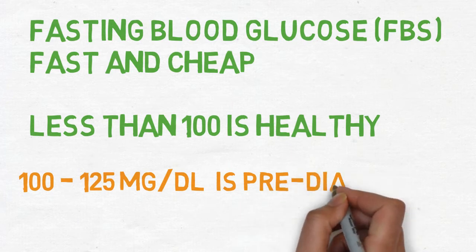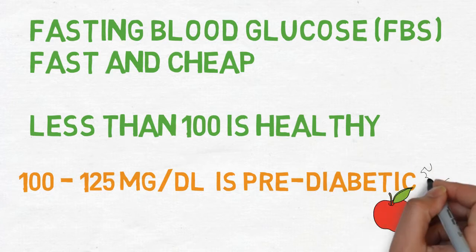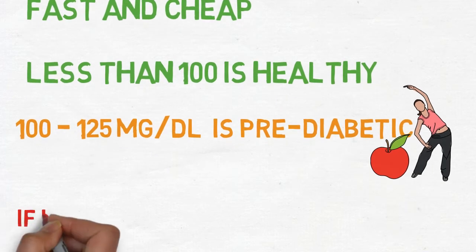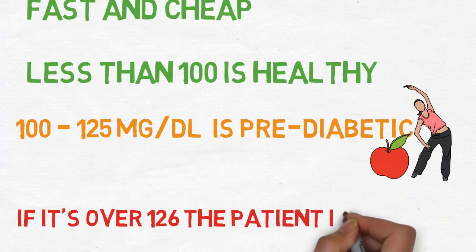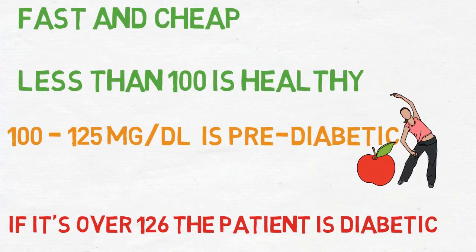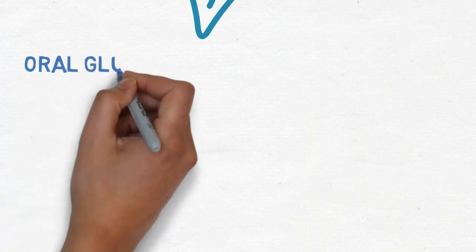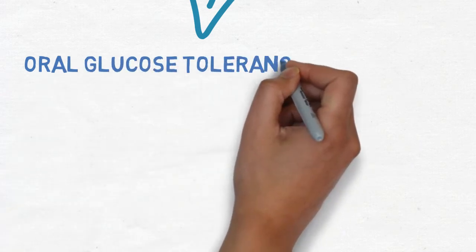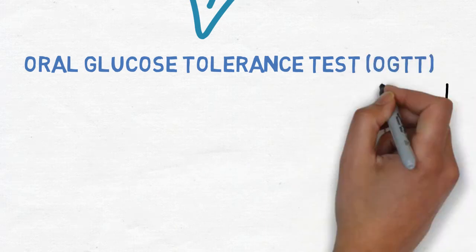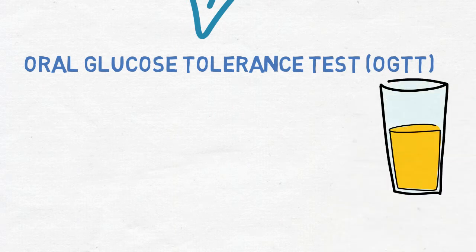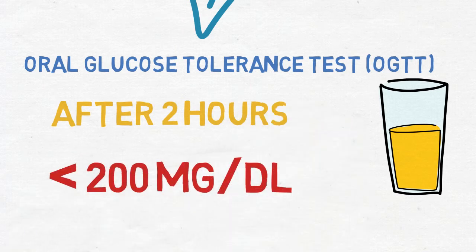In this condition, the patient may be considered a pre-diabetic, and it could be managed by diet and exercise. For patients having fasting blood glucose over 126 mg per deciliter, this indicates diabetes. The second way of diagnosis is the oral glucose tolerance test, or OGTT for short. In this test, the patient will drink a glucose-rich solution and a blood sample will be drawn after 2 hours. Blood glucose level should be less than 200 mg per deciliter.